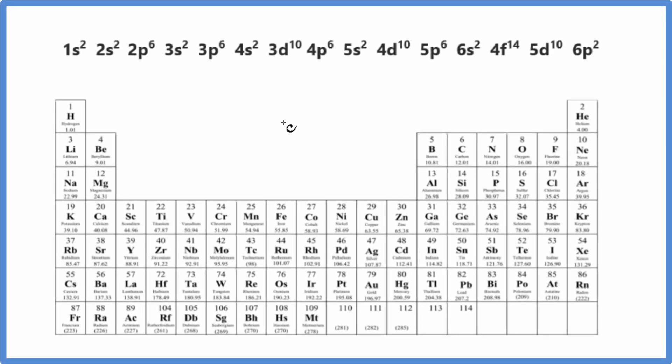In this video, we'll write the electron configuration for Pb, Pb2+, and Pb4+. So lead, the lead 2 ion, and the lead 4 ion.